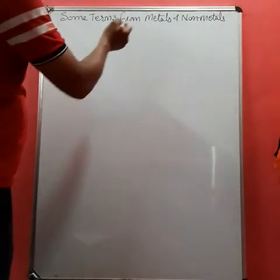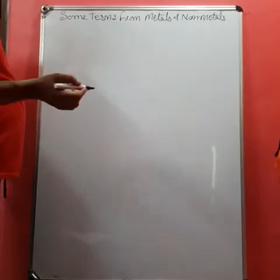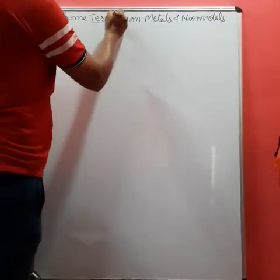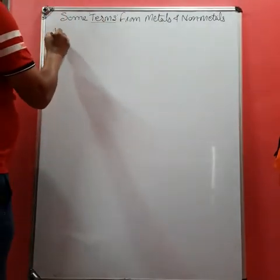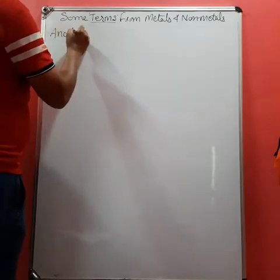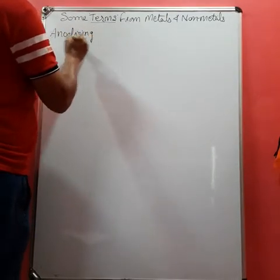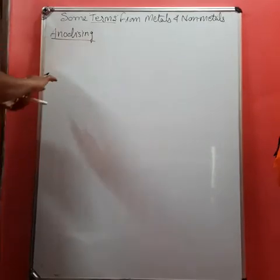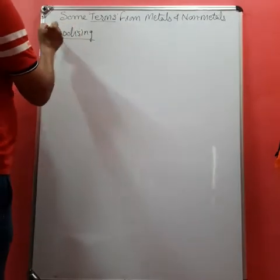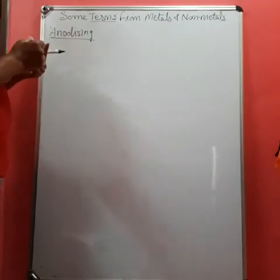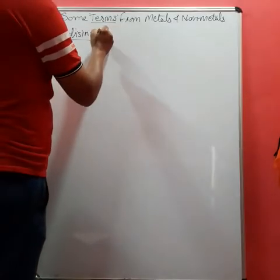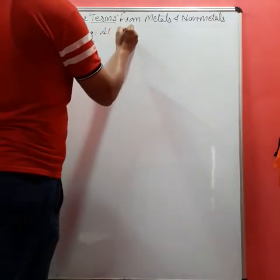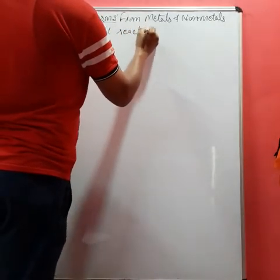Yes students, today I am giving you definitions and explanations of some terms. First one is anodizing. As the term suggests, anode - it is related to electrolysis. You know that aluminum reacts with O2.